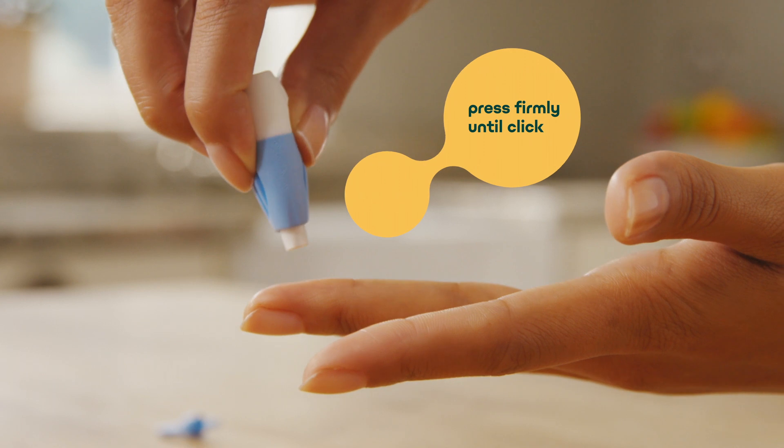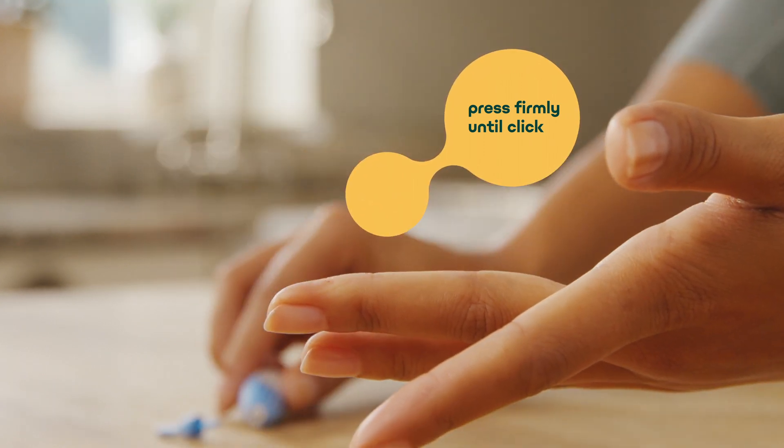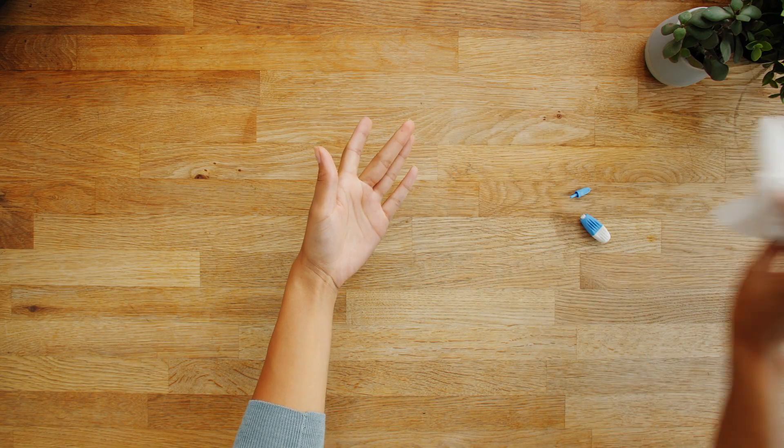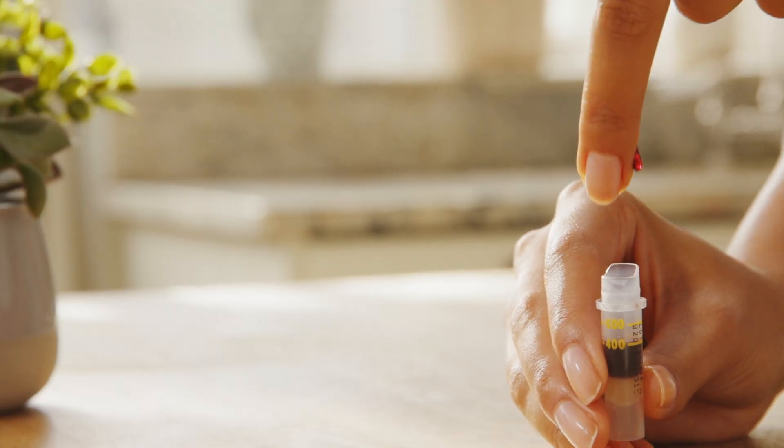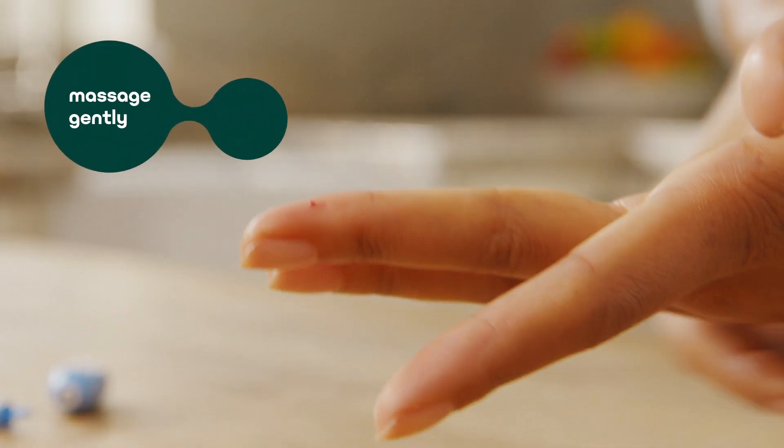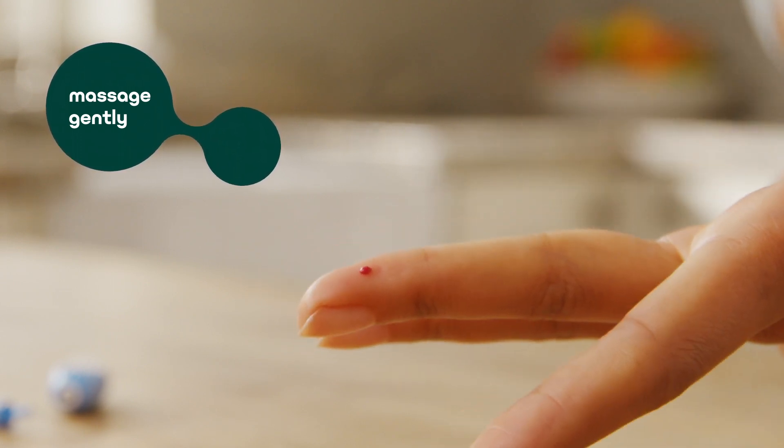Position the lancet on the side of your finger and press firmly against the skin until a click is heard. Allow a small drop of blood to form. Discard the first drop by wiping it away with a clean tissue. Position the finger over the collection tube and let the blood drop. If needed, gently apply pressure to the area surrounding the puncture site to encourage the blood flow until it reaches the upper fill line.